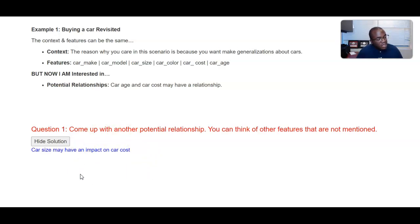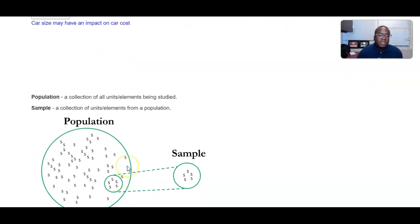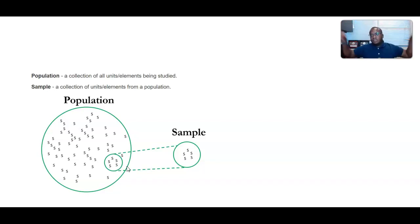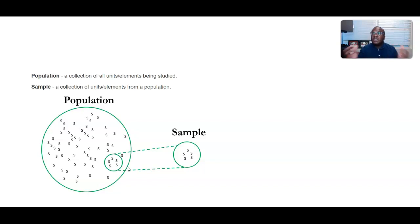Let's talk about another concept in statistical thinking: population and sample. We have this entity that we're after — for example, United States citizens. Those are all the individuals we're trying to understand. A sample would be just a small collection, like the US citizens that live in Indiana. So the population is a collection of elements that you're interested in, while the sample is just a small subset of the population.